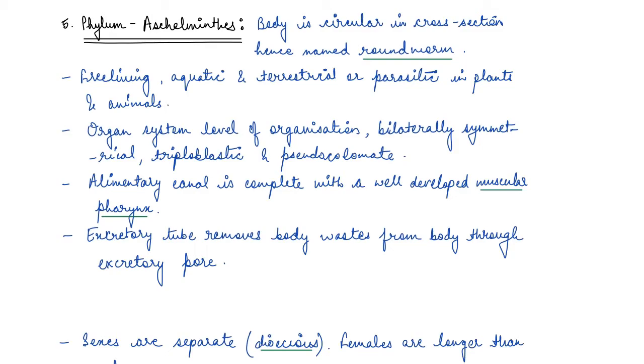They have organ system level of organization. Now it is even more advanced having organ system level of organization. They are bilaterally symmetrical, they have all three layers - ectoderm, endoderm and mesoderm - so they are triploblastic, and they have a pseudocoelom, they are pseudocoelomate. In the case of Aschelminthes, the alimentary canal is completely formed. They have a complete alimentary canal with a well-developed muscular pharynx. The excretory tube removes body waste from body through an excretory pore.